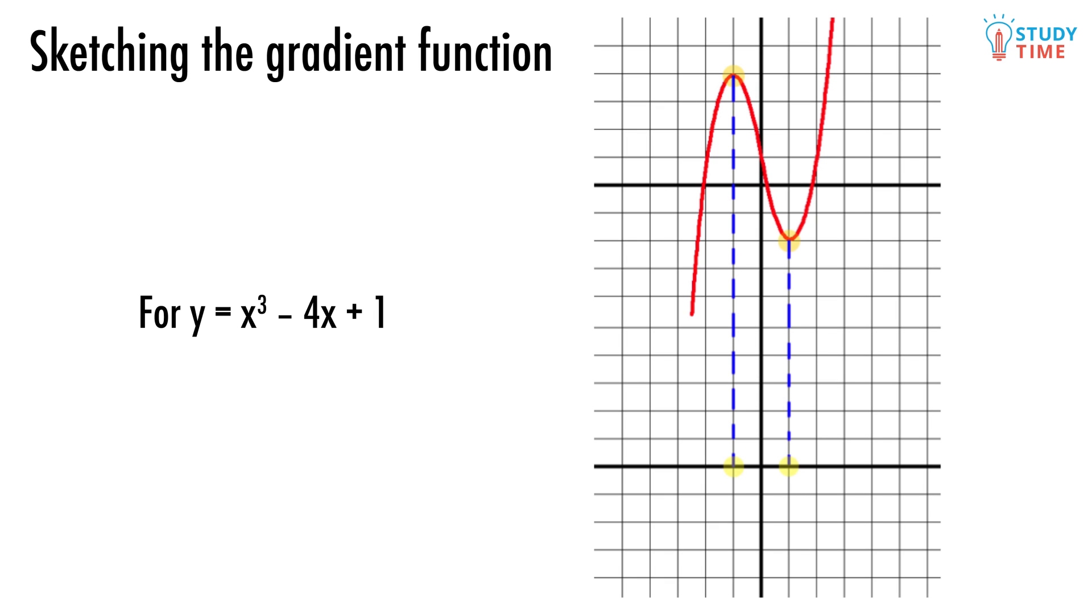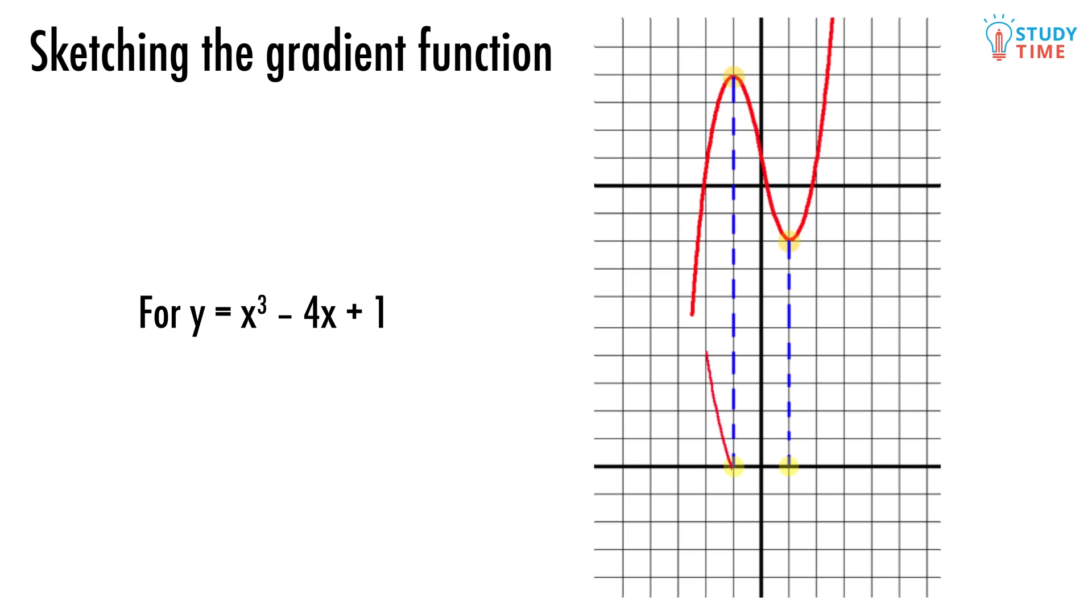Great, now let's move on to the rest of the graph. The entire portion of the graph that's to the left of the maximum is getting higher, so that part of the gradient must be above the x axis. Excellent.